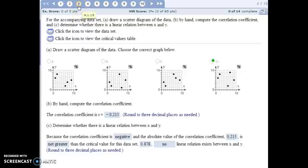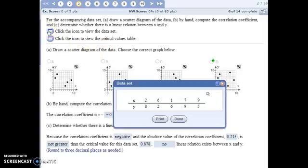For number three, we're going to see if there is a linear relationship between X and Y. First we want to look at the scatter diagram of the data. So we can look at all of our data here.